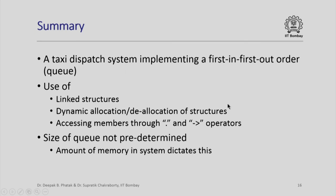In summary, in this lecture we saw how to implement a taxi dispatch system working in first-in-first-out order using linked structures. We made use of dynamic allocation and deallocation of structures and saw that members could be accessed through both the dot and the arrow operators. Note that the size of the queue was not predetermined: every time a new taxi arrived we allocated space in the heap dynamically, and every time a taxi was dispatched we freed that space, so the queue size is limited only by available system memory. Thank you.